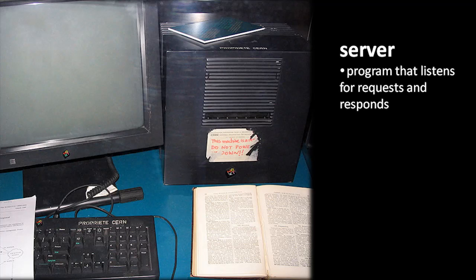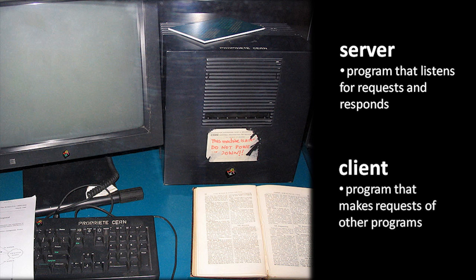We've said that the goal of a computer network is to allow computers to send data to other computers, but in truth, the goal of a network is to allow programs running on those computers to send data to other programs running on other computers. When we talk about programs that make use of the network, we divide them into two broad categories. A server is a program which primarily listens on the network for requests coming from other programs, and the server then responds to those requests. A client, in contrast, is a program which makes requests.